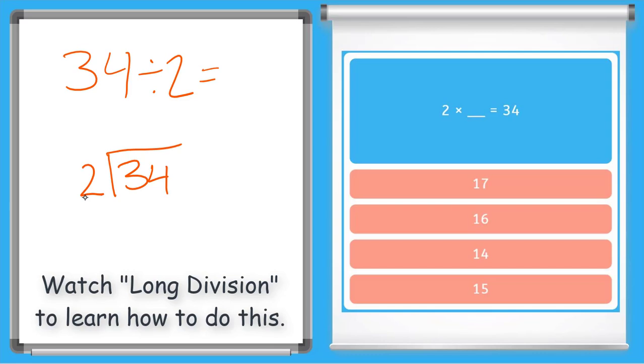2 goes into 3 how many times? 1. 2 times 1 is 2. I will subtract 3 minus 2 is 1. Bring down my 4. And then 2 goes into 14 how many times? 7. So here's my final answer, 17. 34 divided by 2 equals 17.